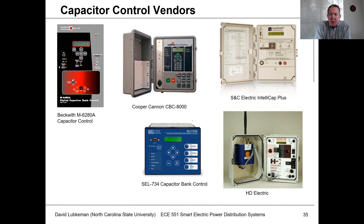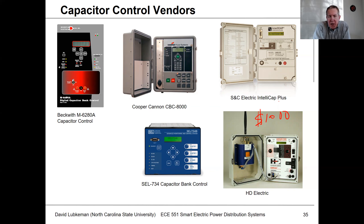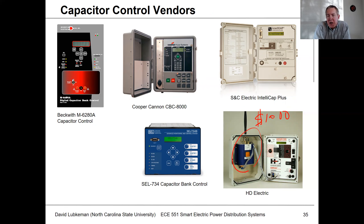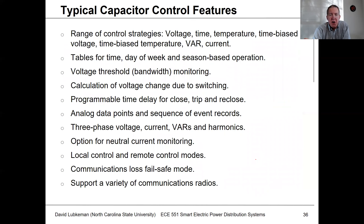This shows what some of these controllers look like. At the low end, these are maybe $1,000 boxes, and with more control functionality they cost more, but they're not really very expensive controls. If all you're doing is controlling on voltage, it doesn't take a lot of logic. Most vendors have a dedicated capacitor control they sell. You can put a radio inside the case and communicate to a device at a remote location. Another slide shows all the different control features available in most common capacitor controls, and you can get the manual for these devices to see what all they can do.